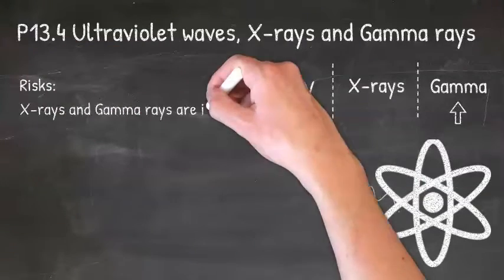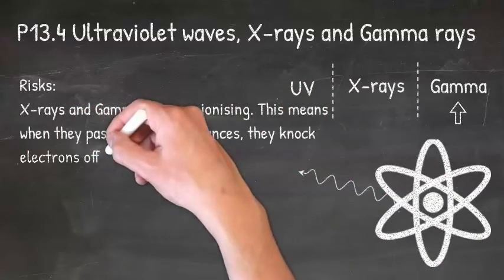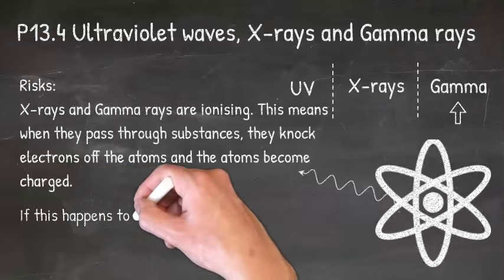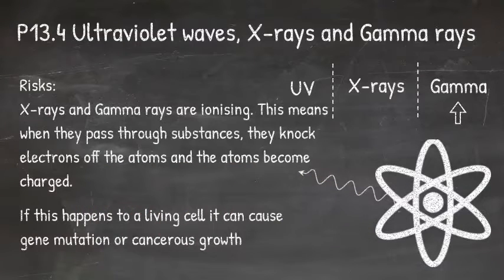X-rays and gamma rays are ionizing. This means when they pass through substances, they knock electrons off the atoms and the atoms become charged. If this happens to a living cell, it can cause gene mutation or cancerous growth.